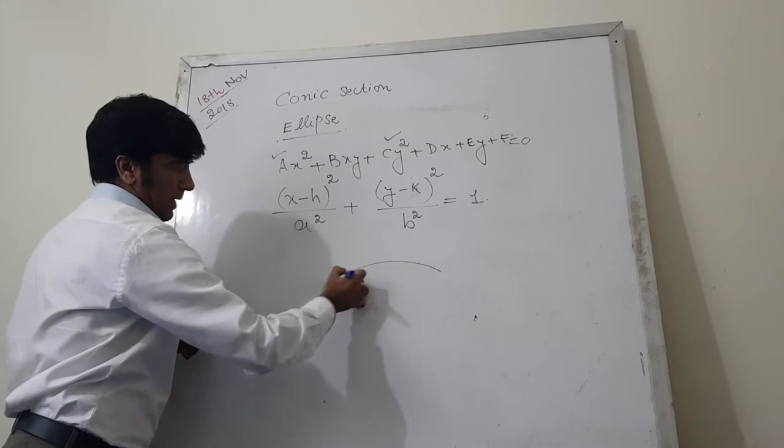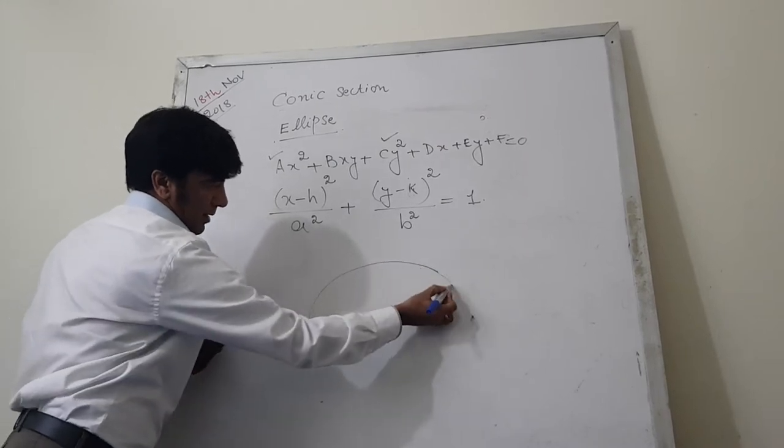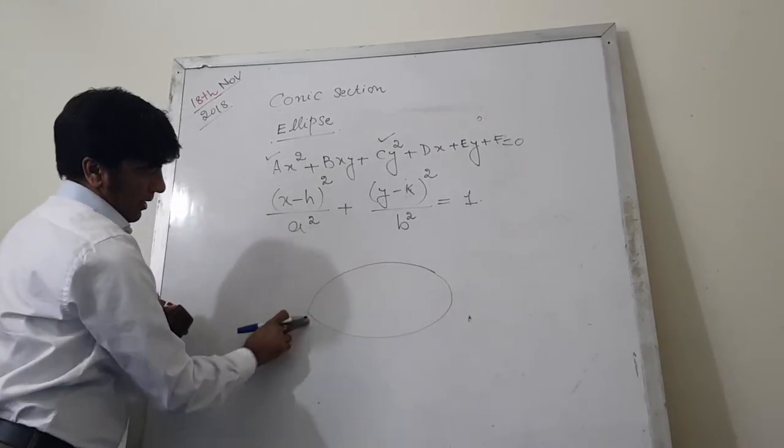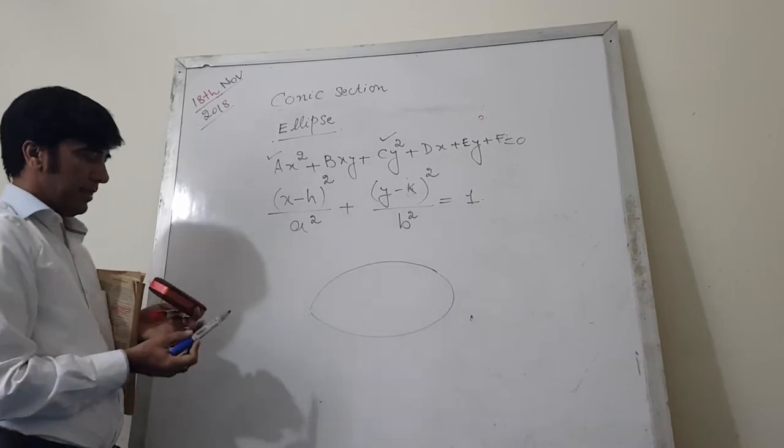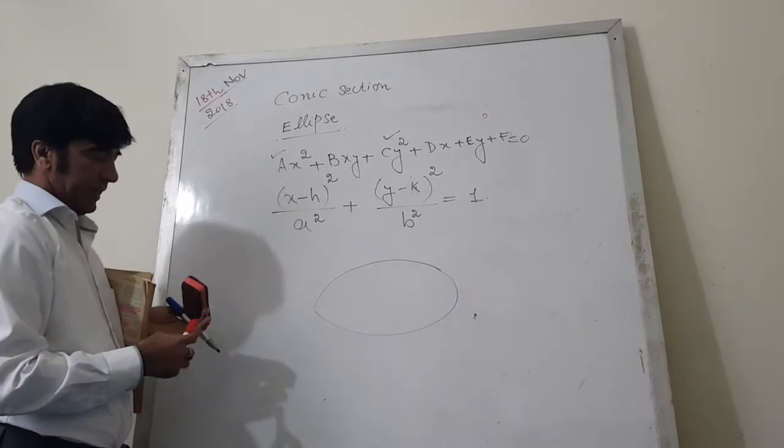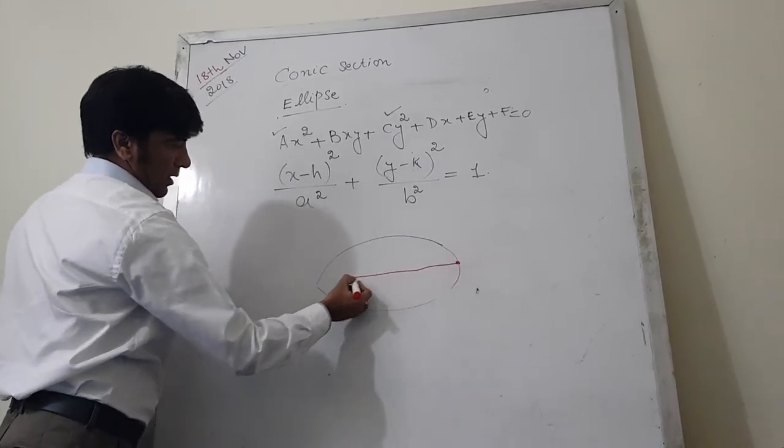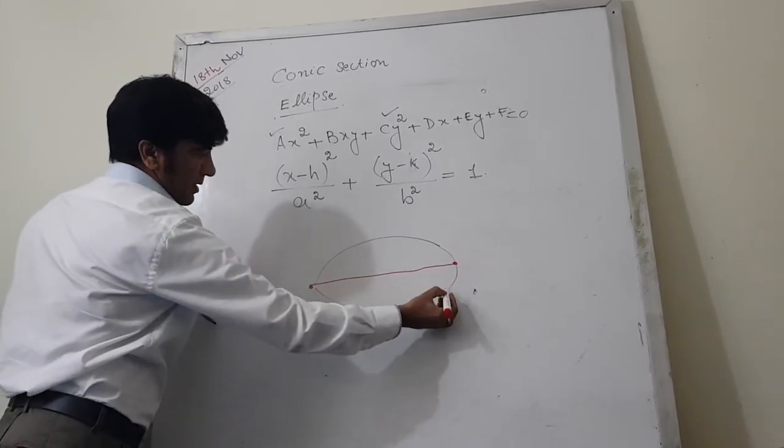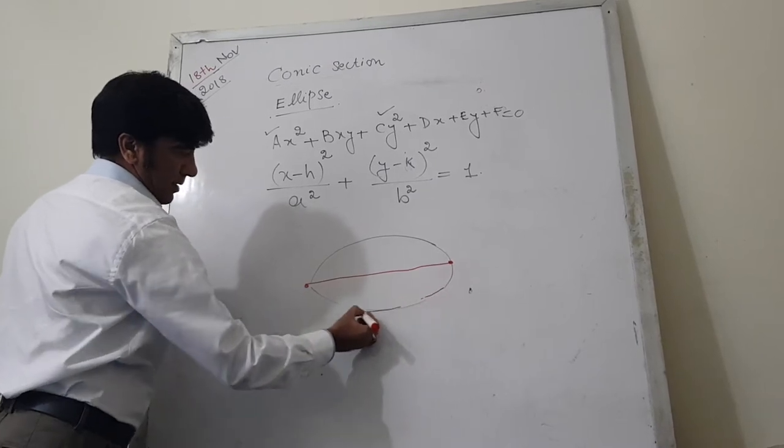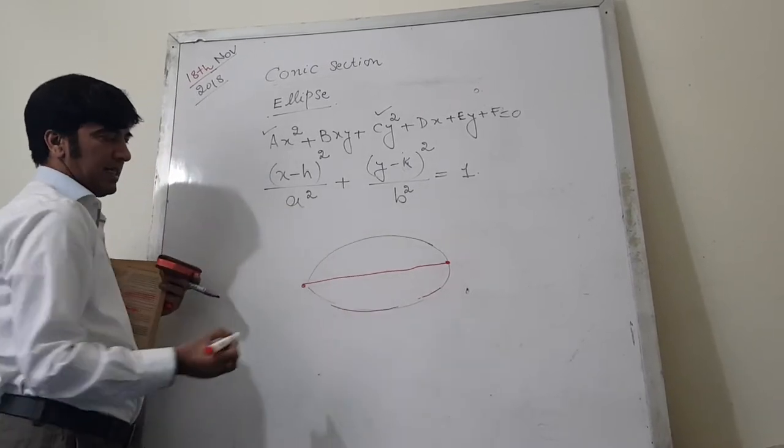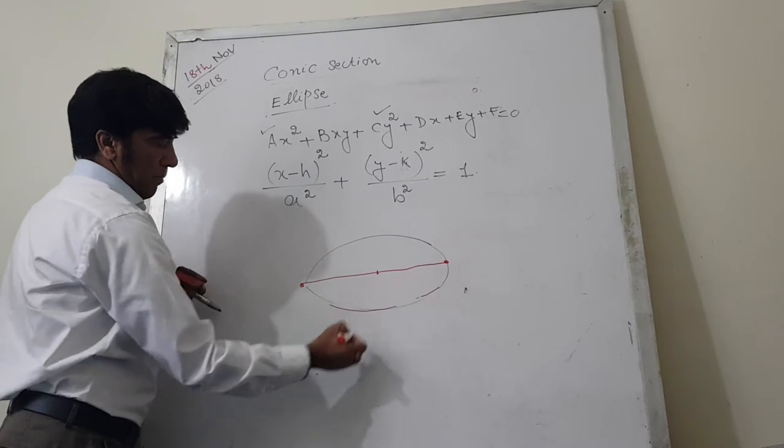The ellipse would be like this. Basically in ellipse, the line which cuts this ellipse into two parts is called major axis.